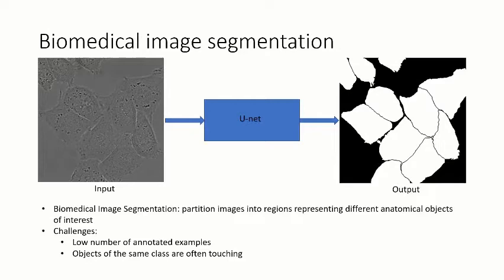There are two main challenges in that problem, which are that the amount of training data is limited due to the nature, and that the different regions in the image are often touching each other, which makes the segmentation more difficult. So U-Net aims to solve these problems, as we're going to show.